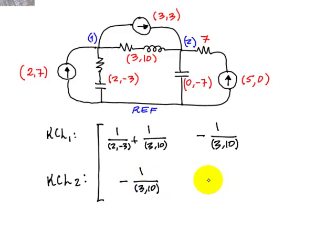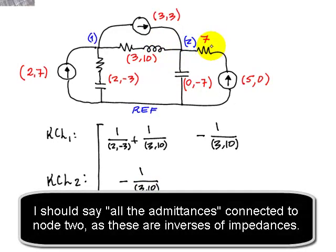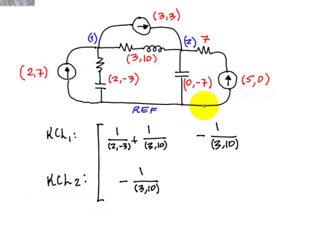And the coefficient for equation 2 will be all the conductances connected to node 2. Do not fall in the trap of including 1 over 7, right? This is to be treated as a current source only branch.